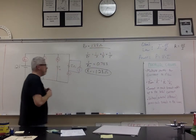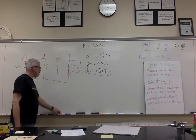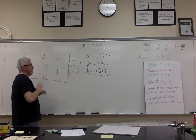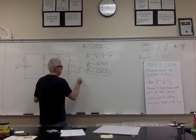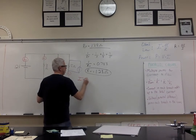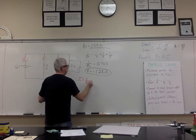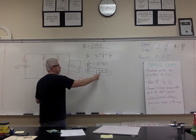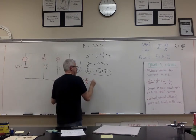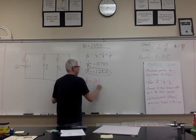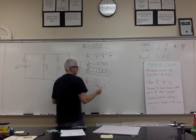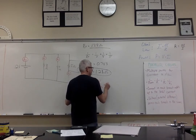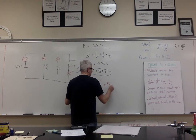Now I'm going to go and try to figure out the total current. That's actually pretty easy — if I go back to Ohm's Law, I know the circuit has 12 volts and my circuit resistance is 1.28 ohms. So 12 volts divided by 1.28 ohms comes out to approximately 9.4 amps. That's a lot of current.